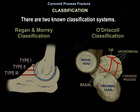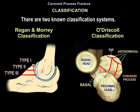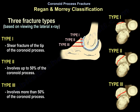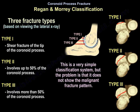There are two known classification systems. The Regan and Mori classification is based on viewing the lateral x-ray: Type 1 is a shear fracture of the tip, Type 2 involves up to 50% of the coronoid, and Type 3 involves more than 50%. This is a very simple system, but the problem is that it does not show the malignant fracture pattern.